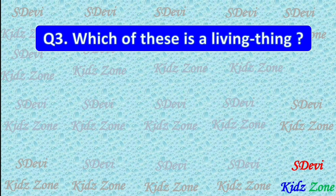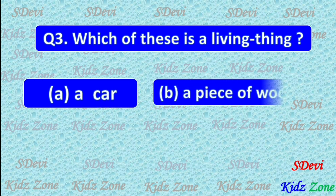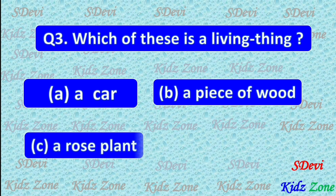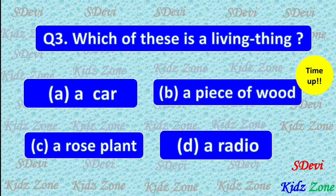Question 3. Which of these is a living thing? A. A car. B. A piece of wood. C. A rose plant. D. A radio. The correct answer is C. A rose plant.